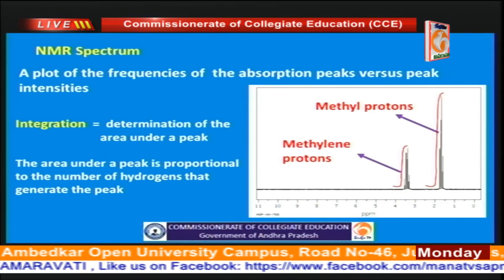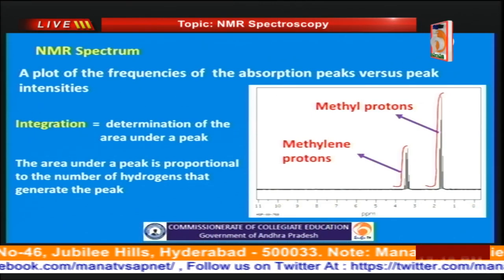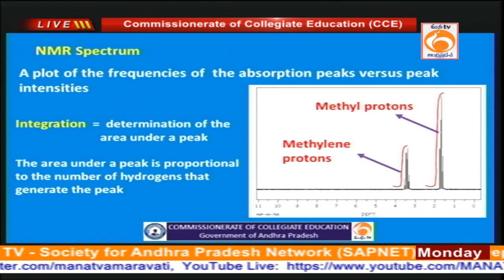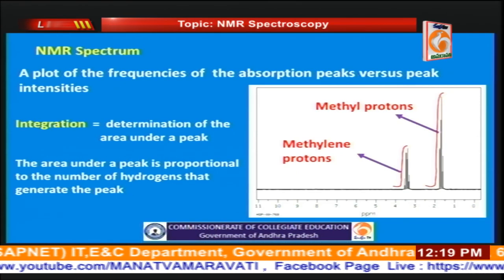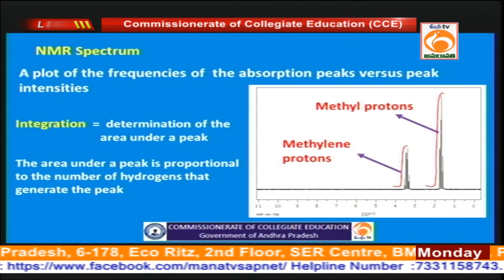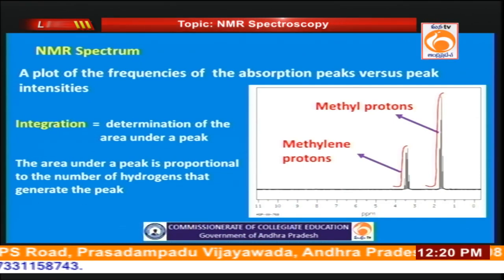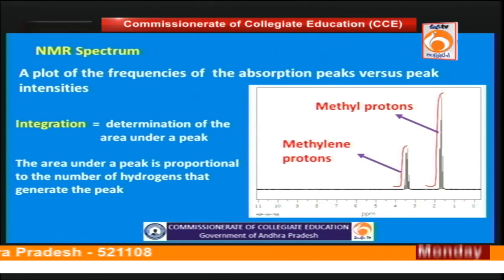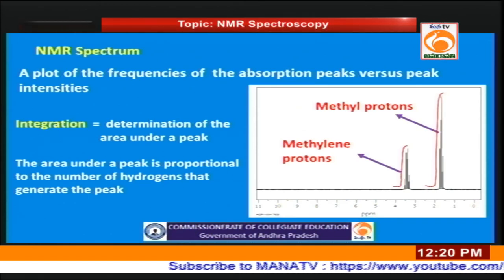Now we will go to the NMR spectrum. An NMR spectrum is basically a plot between the frequency of the absorption peaks and their intensities. From an NMR spectrum we get information about the position of the peaks, how the protons are coupled with other protons, and how many protons give rise to a particular peak. Integration is a very important factor — the integration of a peak gives information about the number of protons giving rise to that particular peak. By integrating we get the area, and the area depends on the number of protons.